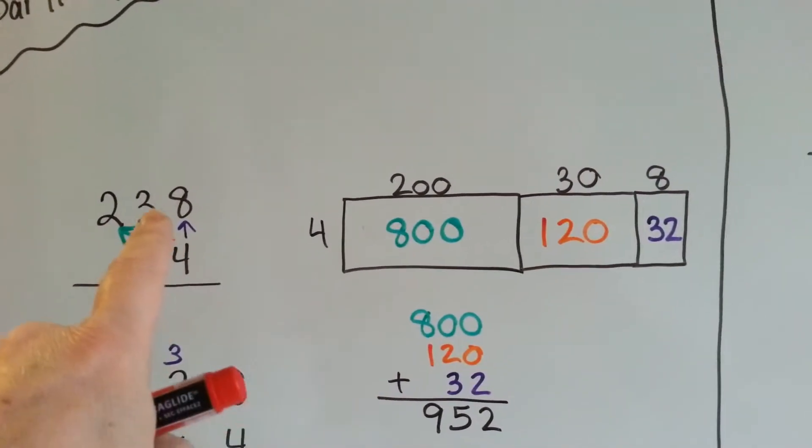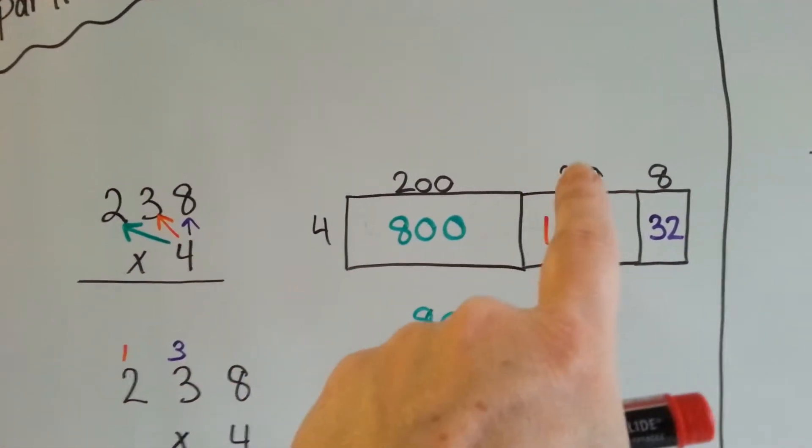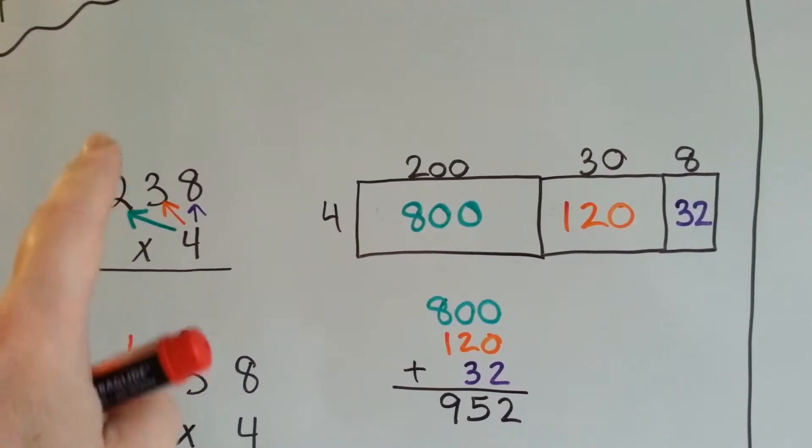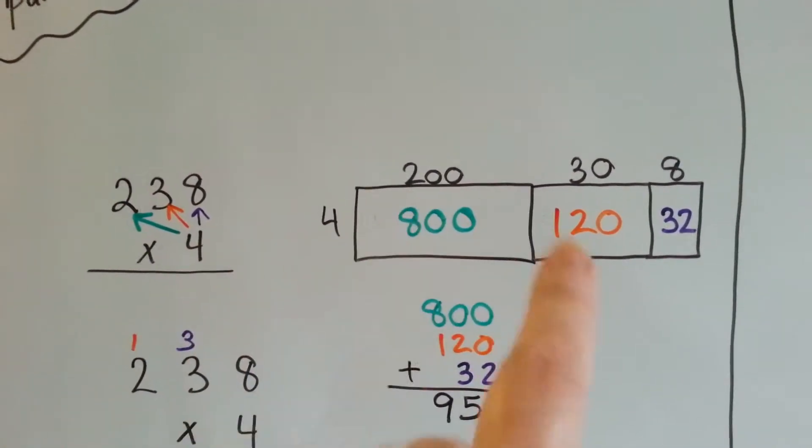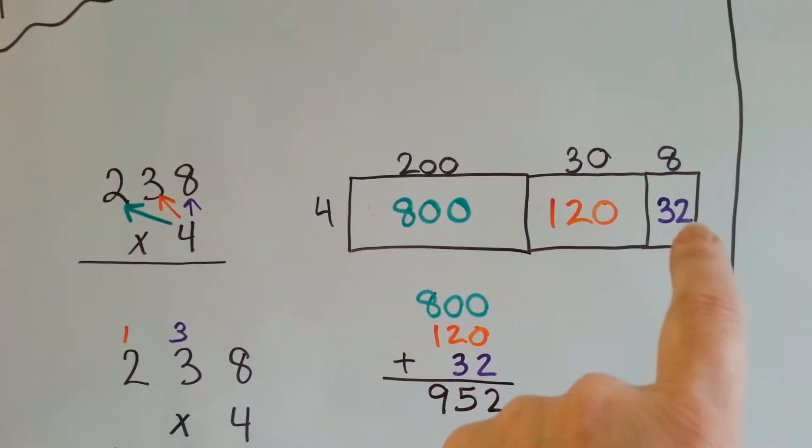We've got 4 times 30, because that's the tens place. So we've got 4 times 30. And we've got 4 times 200, because it's in the hundreds place. See? We would do each one of these, and then put the answer in the box.